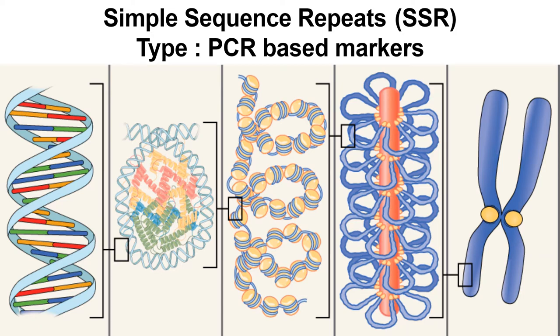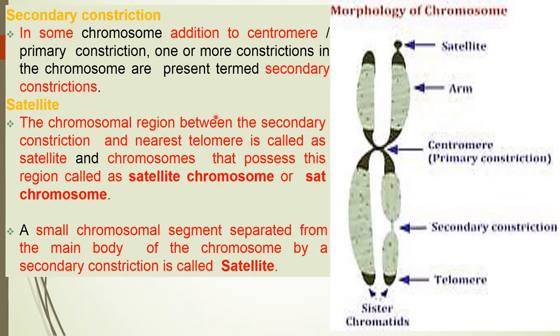Before knowing about simple sequence repeat, we should know what is the secondary construction in a chromosome and what is a satellite chromosome or SAT chromosome. In addition to the centromere or primary construction, one or more constructions in the chromosome are present, and they are termed as secondary construction satellites. The chromosome region between the secondary construction and the nearest telomere is called a satellite, and the chromosome that possesses this region is called a satellite chromosome or SAT chromosome.